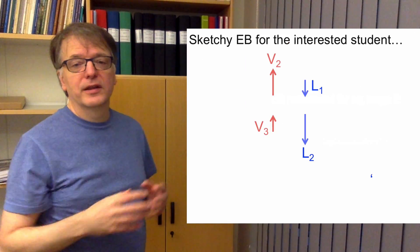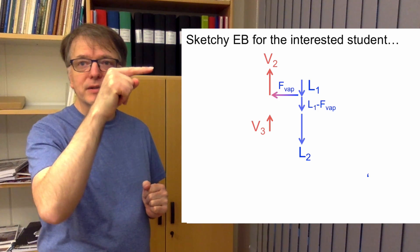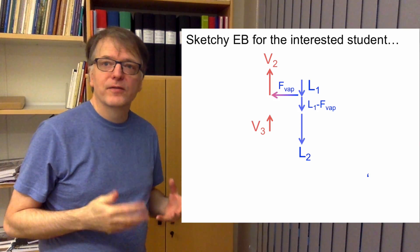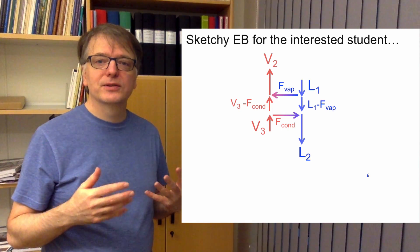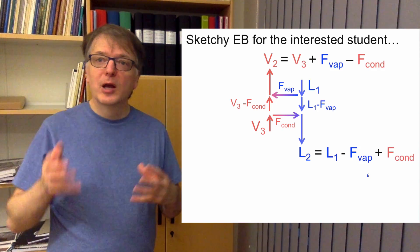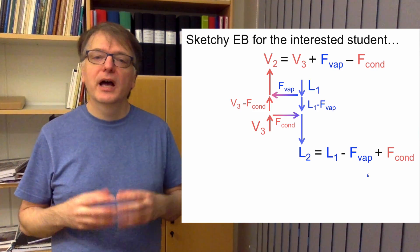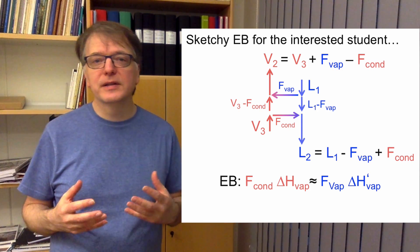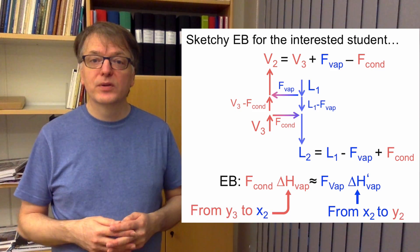If you want to look at this more carefully, here is a sketchy energy balance for the system: L1 going down, L1 minus F_vap going further down, F_vap going to the vapor, V3 coming up, F_cond going over to the liquid, V3 minus F_vap going up. So V2 equals V3 plus F_vap minus F_vap, and L2 equals L1 minus F_vap plus F_vap. If F_vap times delta H_vap is approximately the same as F_vap times delta H for that flow, then we don't need to make an energy balance.